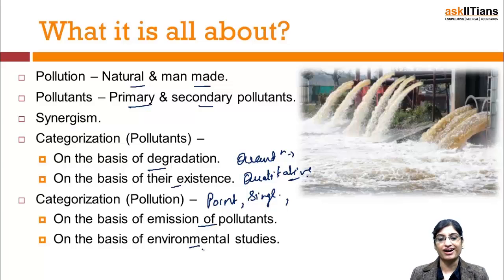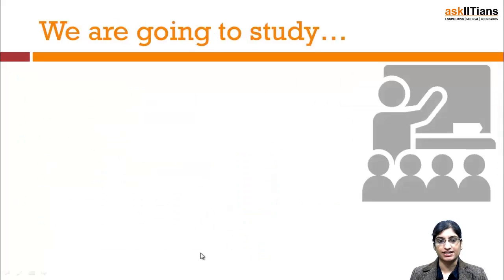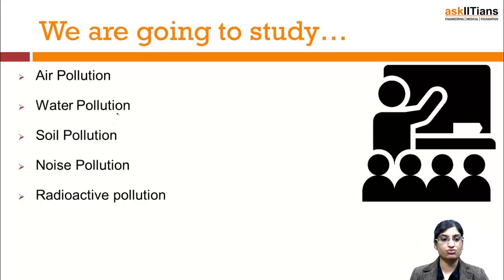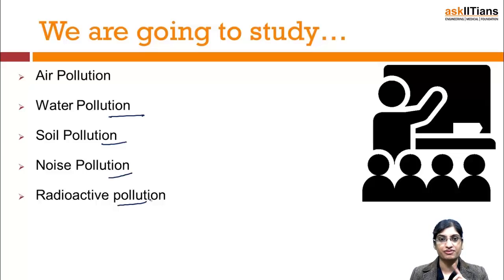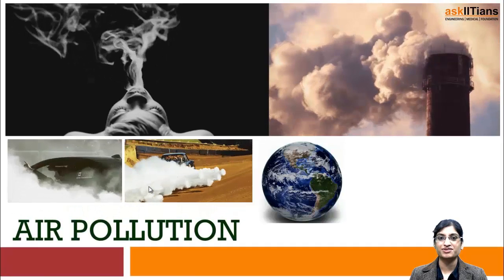Next categorization is on the basis of environmental medium, which is what we are going to study in this chapter — Environmental Issues. The types are: air pollution, water pollution, soil pollution, noise pollution, radioactive pollution, and thermal pollution. In the first part, we are going to learn about air pollution.